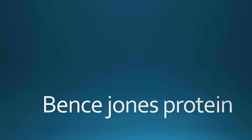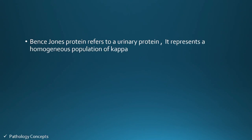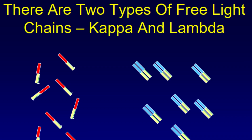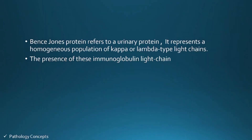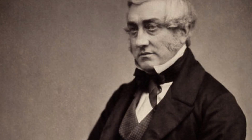Hello and welcome everyone. Today our topic of discussion is Bence Jones protein. Bence Jones protein refers to urinary protein; it represents a homogeneous population of kappa or lambda type light chains. The presence of these immunoglobulin light chain proteins in the urine is linked to several systemic diseases.